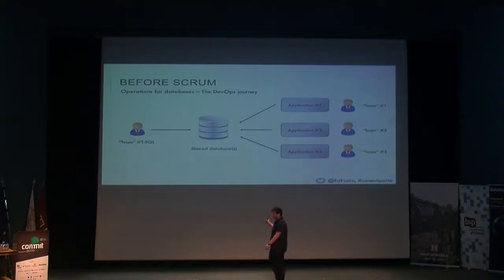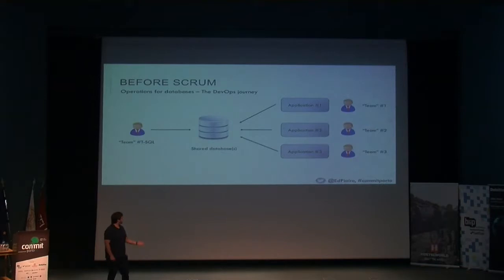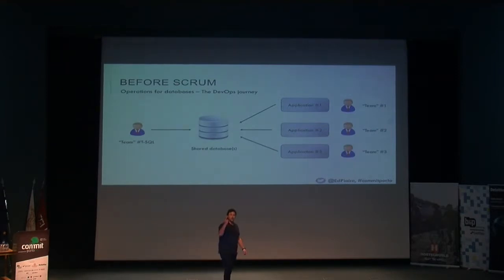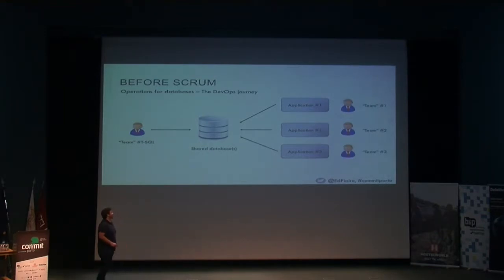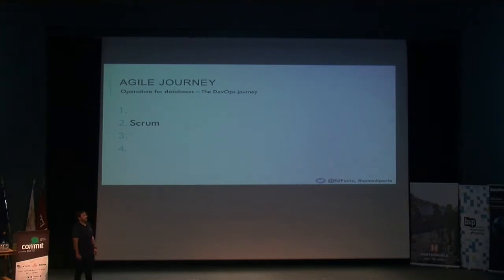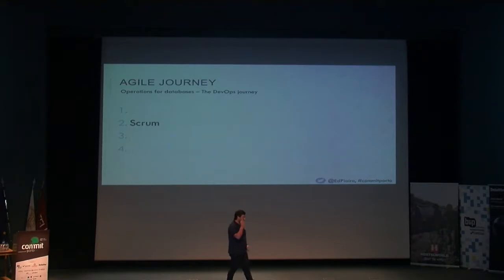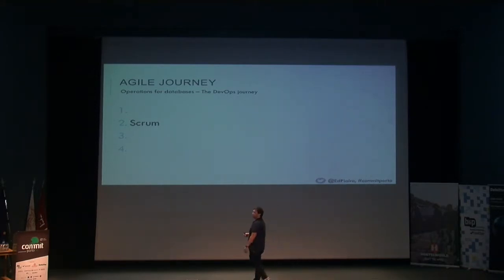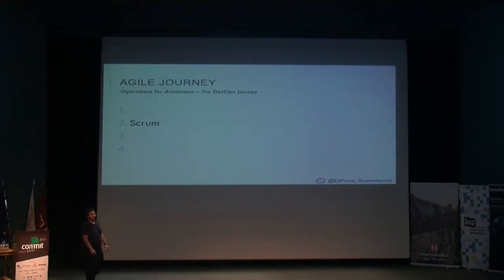And this was the first scenario. We have some applications that share a database. How many of you recognize this scenario? How many of you have a database exclusively connected to one single application? Okay, good for you. If you share a database, you have to communicate with the other teams — everything is involved. So we start to grow. We went from five to ten. And since we are sharing the database, the coffee machine was not effective anymore. We start to send emails, we start to have dashboards, and we start to think that we should do something about it. And then, Scrum comes in.